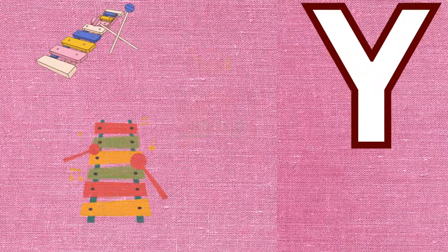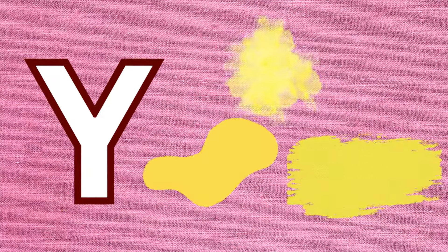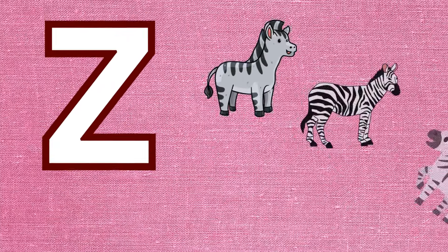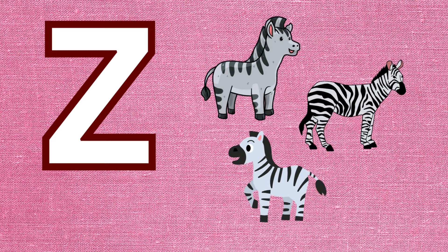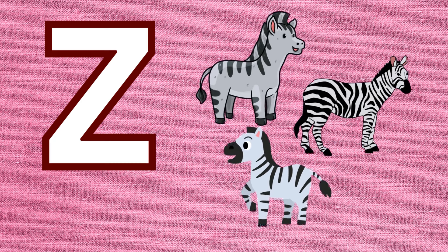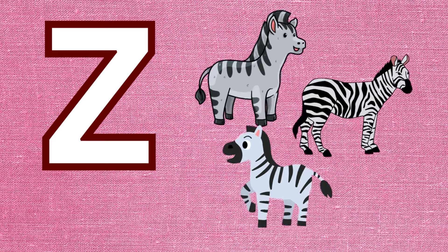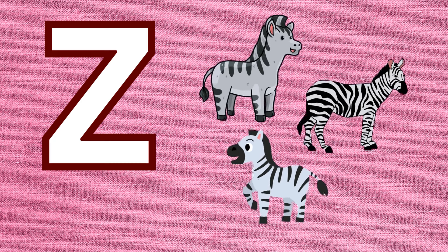E is for elephant, e-e-elephant. F is for frog, f-f-frog. G is for goat, g-g-goat. H is for hand, h-h-hand.